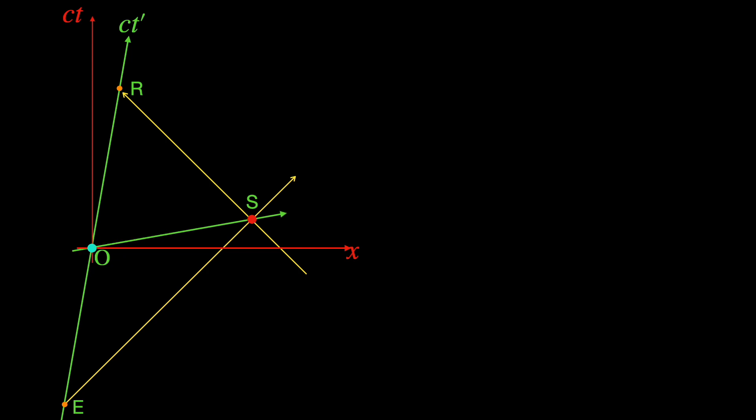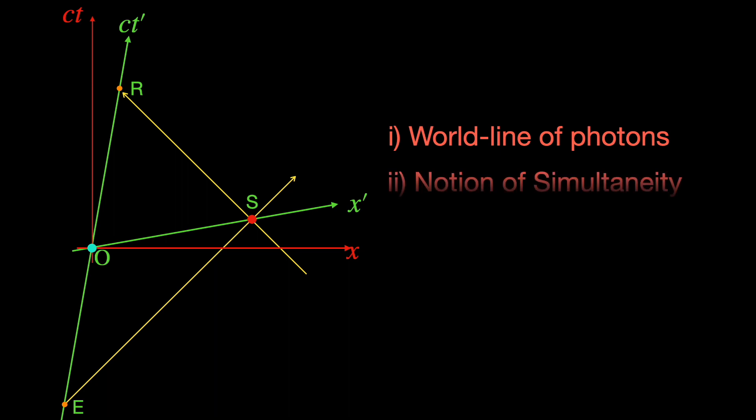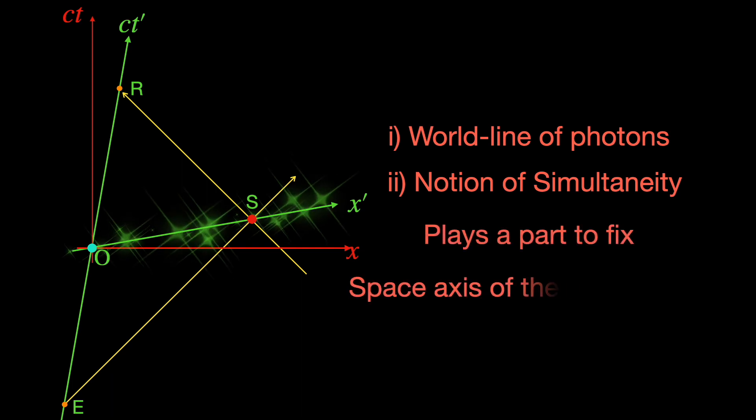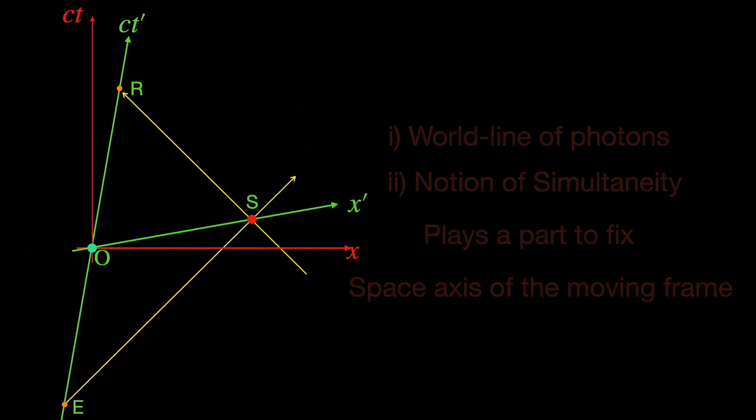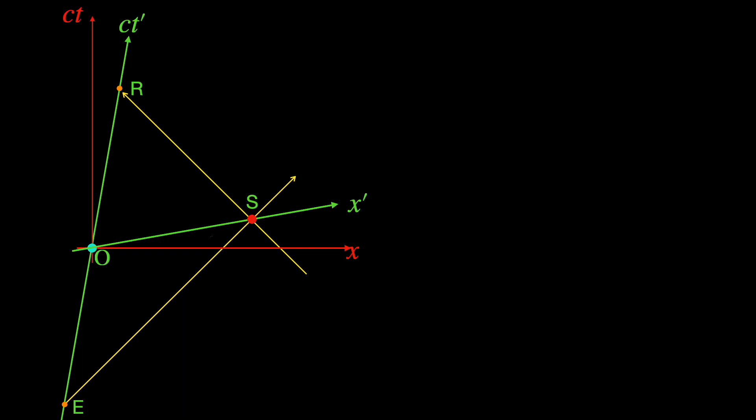Joining s with o you get the space axis of s1 frame. Notice how the light paths that is 45 degree photon world lines and the notion of simultaneity both consequences of the second postulate of special relativity play a crucial role in deciding the orientation of the moving frame space axis. Now you may have noticed that the angle between the two space axis and that between the two time axis look eerily equal at least visually and they indeed are equal.